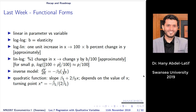One advantage of the log-log model is that the units in which X and Y are measured don't cause any interpretation issues. All you're saying is: a 1% change in X leads to a beta hat percent change in Y — it's percent change, not units.